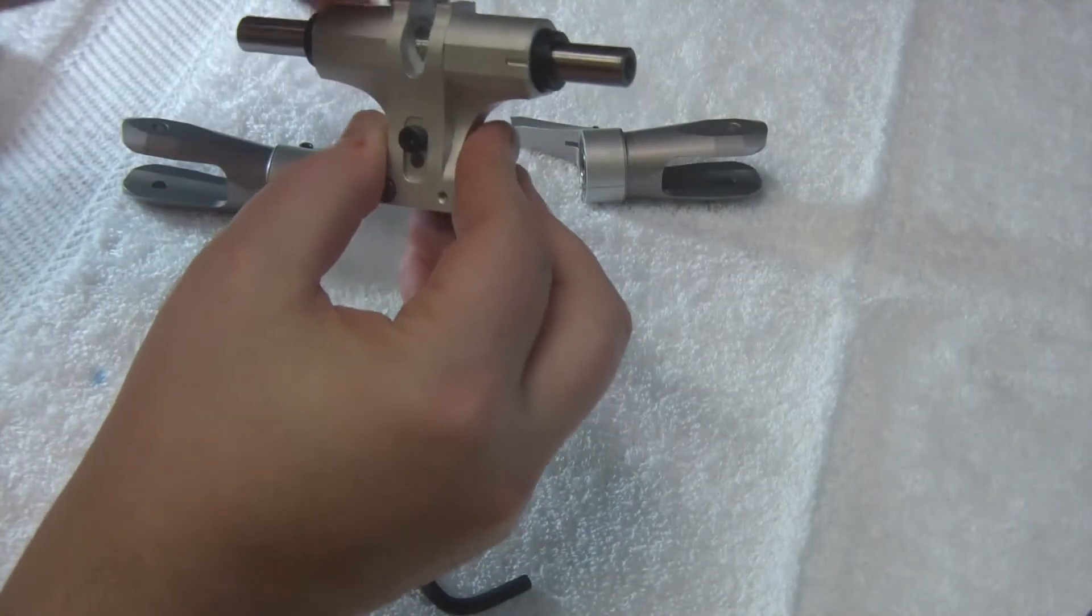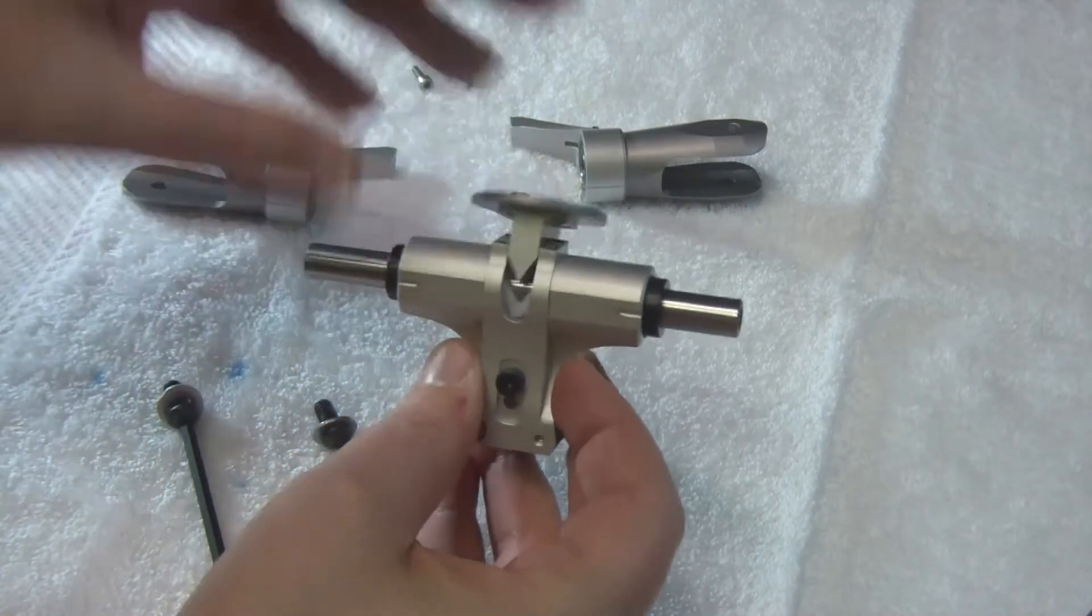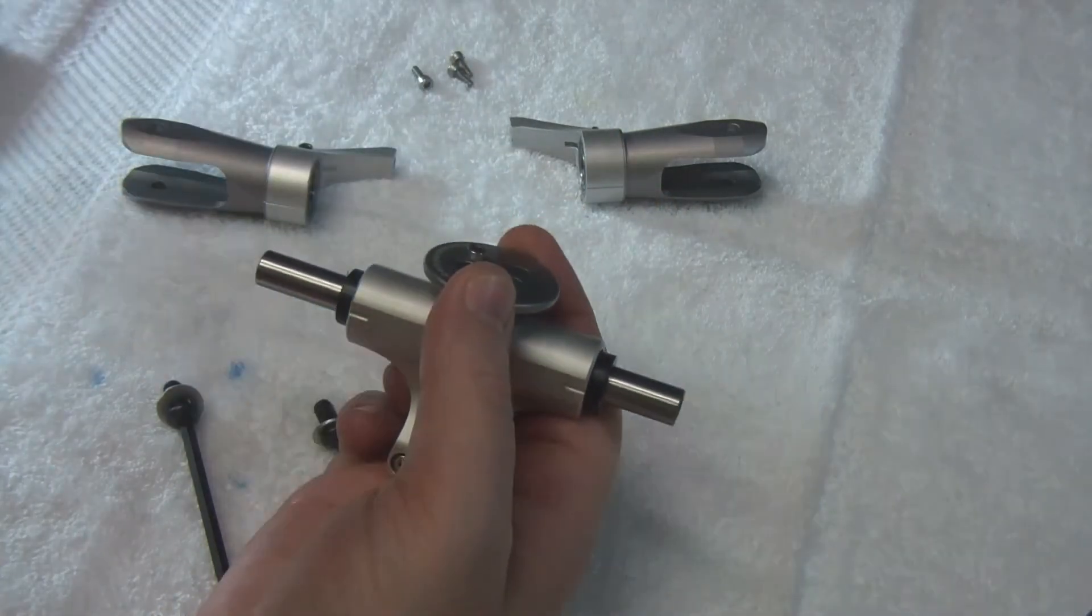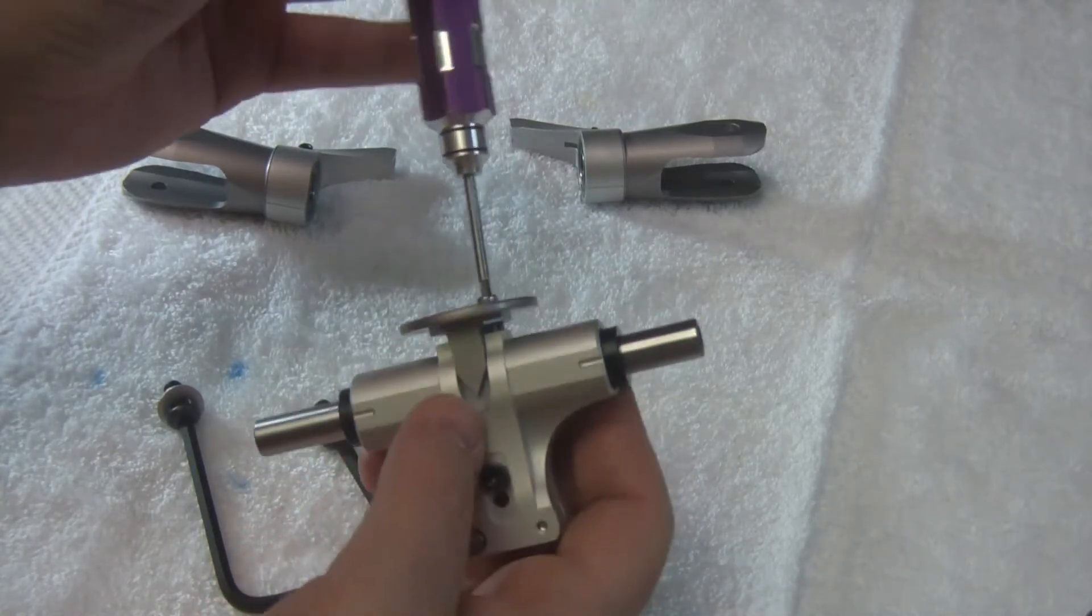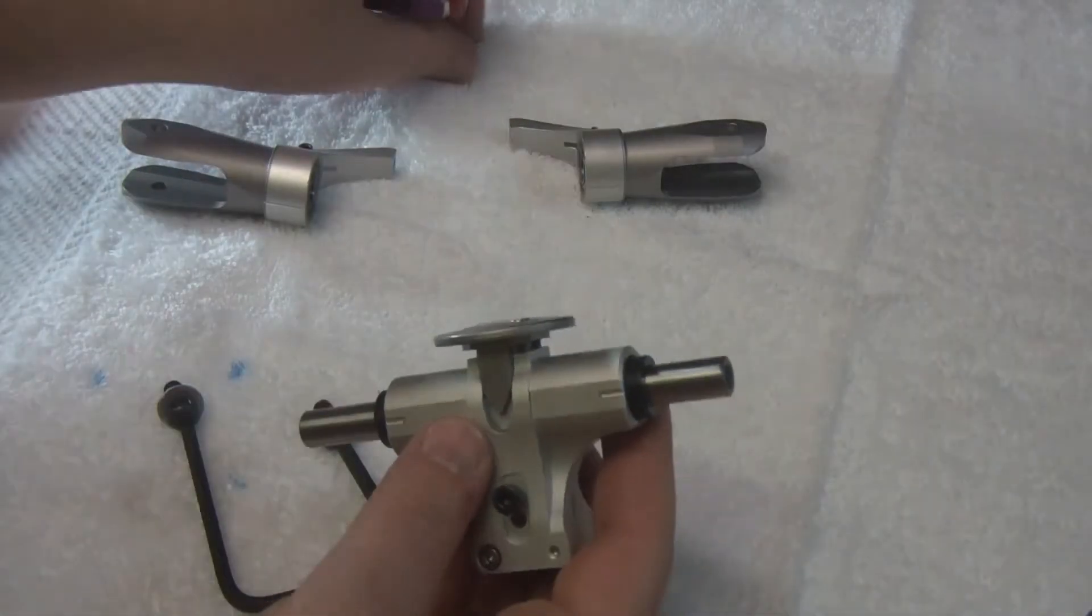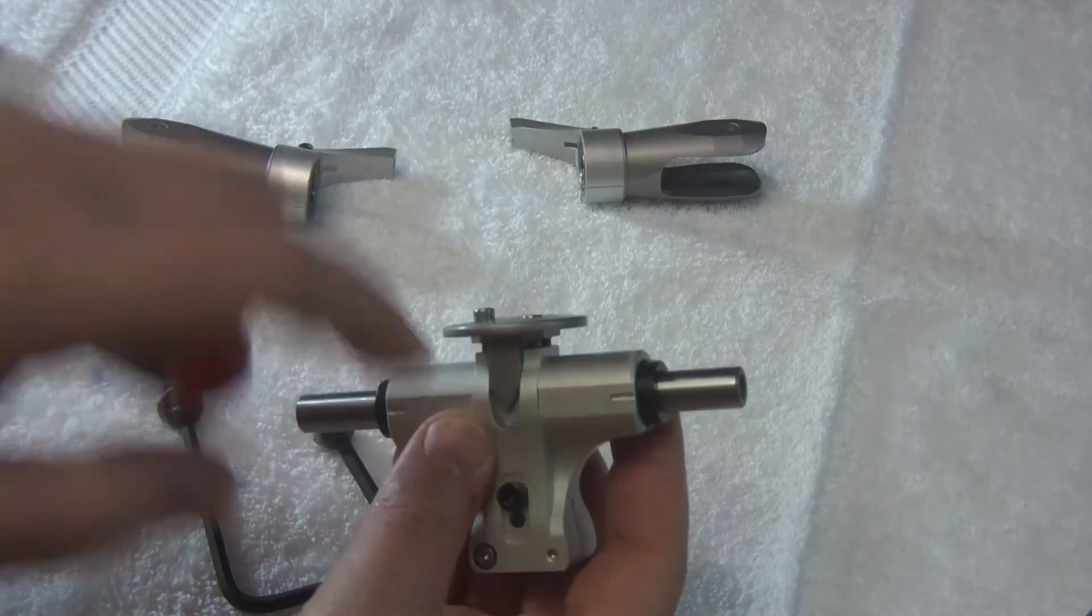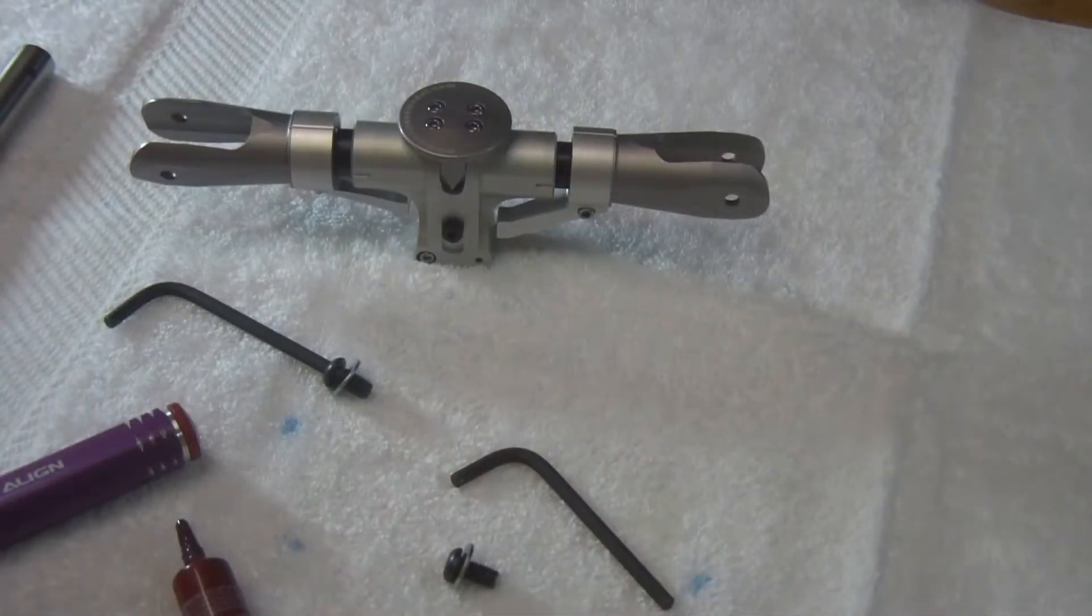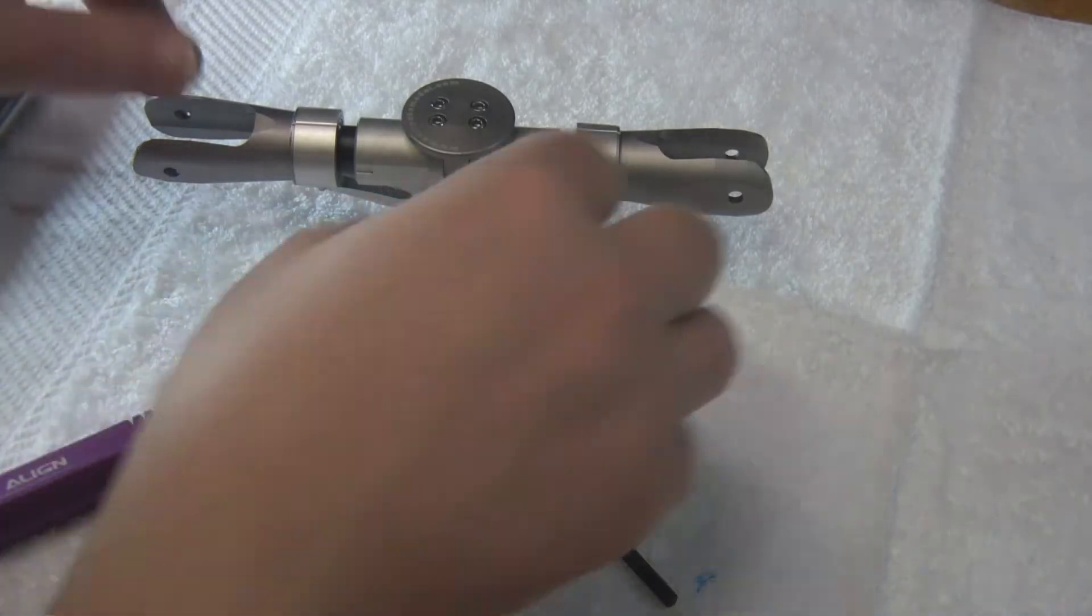Before you put the grips on and tighten it down, you want to go ahead and put the head button on. What this will do is center the other plastic in the middle here so that it doesn't slide either way when you're tightening it up.